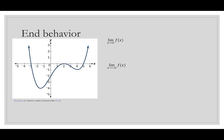Here's another function — it kind of looks like a W — and we want to see what happens when x goes to infinity. Tracing along the function, as x goes to infinity, f(x) also goes to infinity; it's getting bigger and bigger, so we write positive infinity. On the left, as x goes toward negative values, f(x) is also going up, so we write positive infinity.